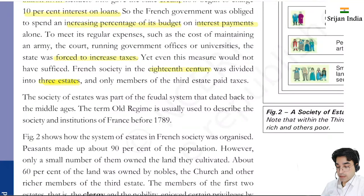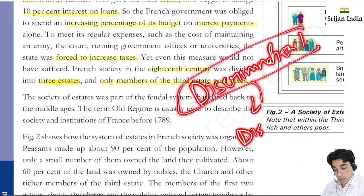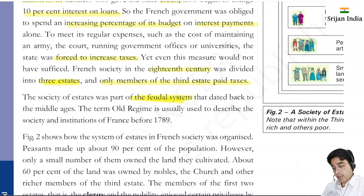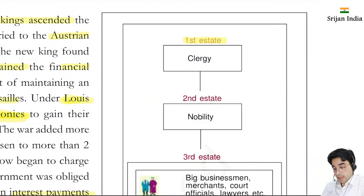Only members of the third estate paid taxes - discrimination was happening. Wherever discrimination occurs, public discontent arises and people become angry. The society of estates was also part of the feudal system that dated back to the middle ages. They had divided society into three estates. The term 'old regime' is usually used to describe the society and institutions of France before 1789.